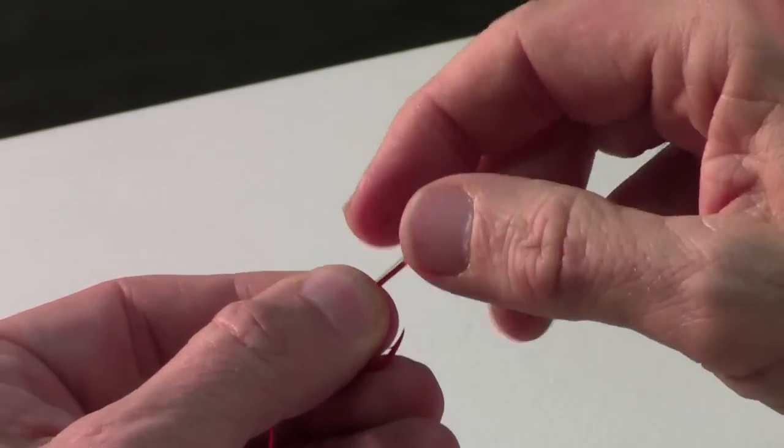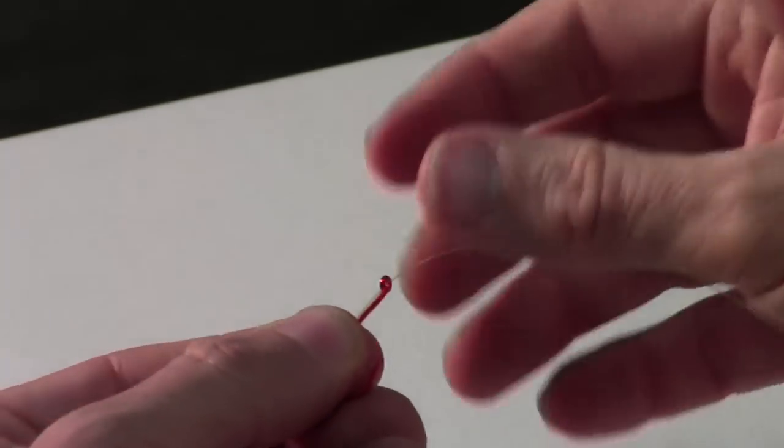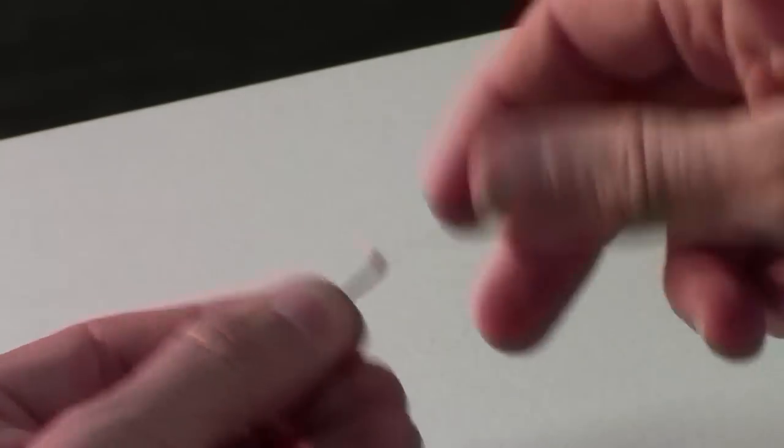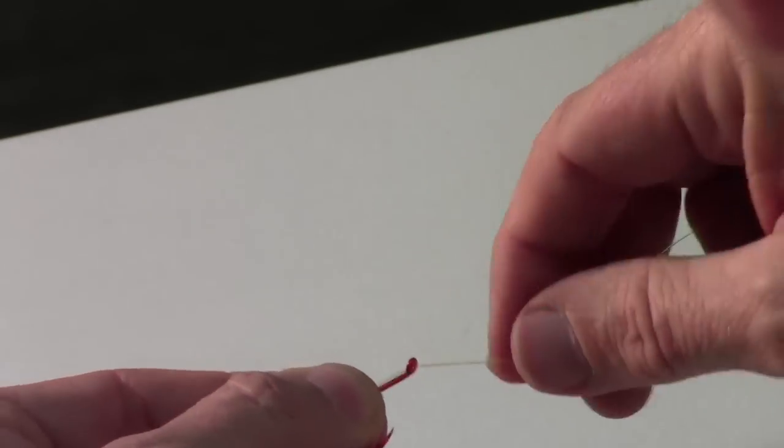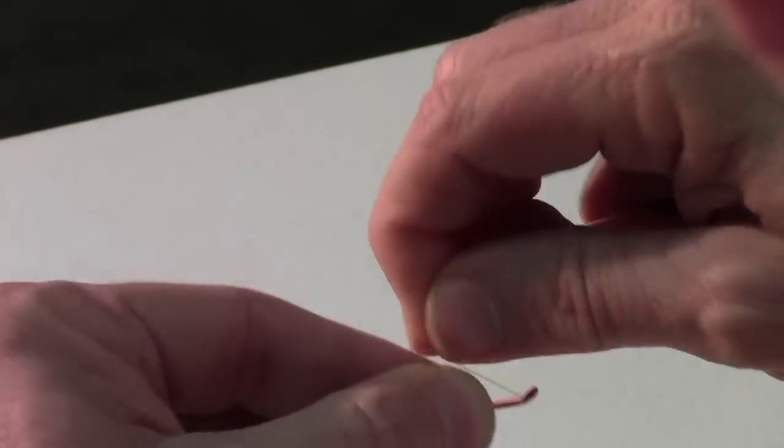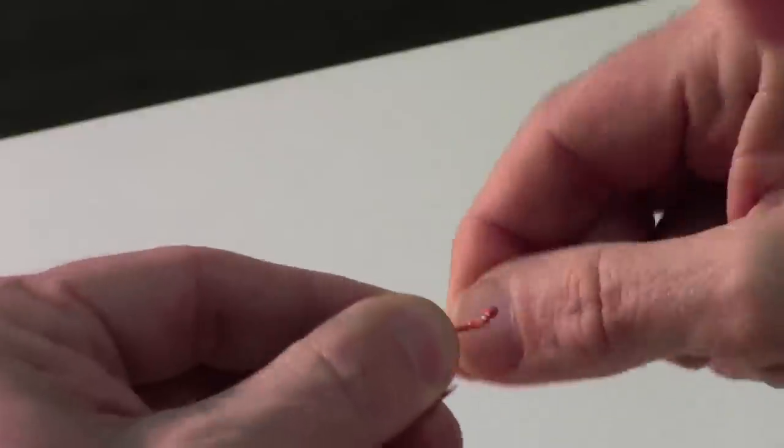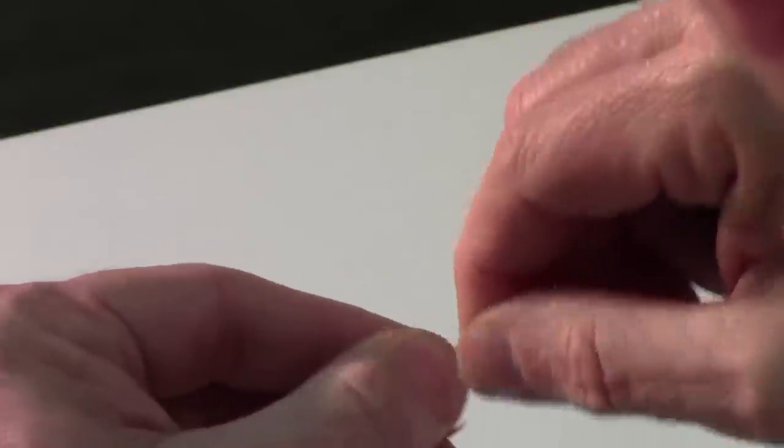Once again I use my left hand index and thumb to hold that line in place. Now I take my right hand and loop around three, four, five, six, seven, eight.